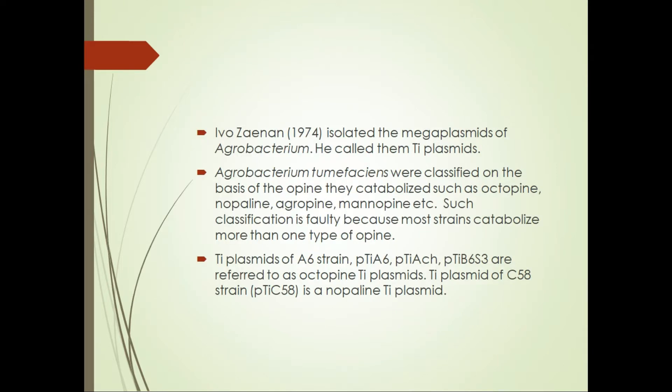In 1974, these plasmids were isolated for the first time and named Ti plasmid. Agrobacterium tumefaciens is a plant pathogenic bacterium which naturally transmits a part of the Ti plasmid to a eukaryotic organism — the plant. Because of this ability, this bacterium is known as a natural genetic engineer.